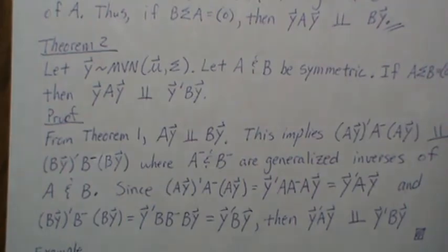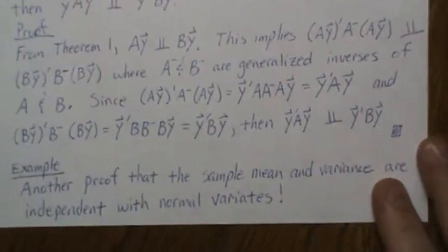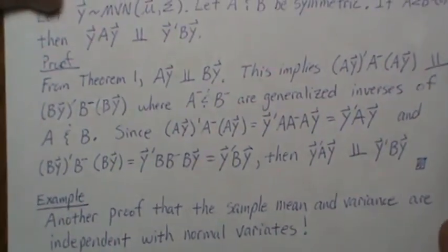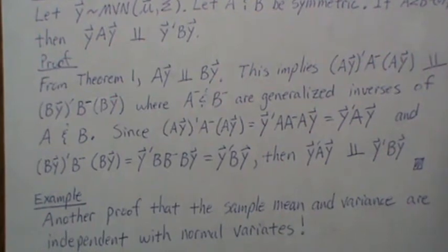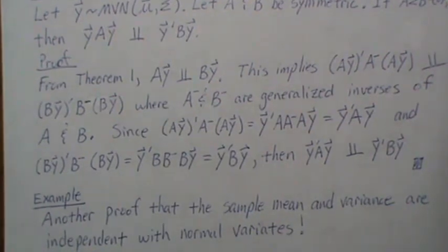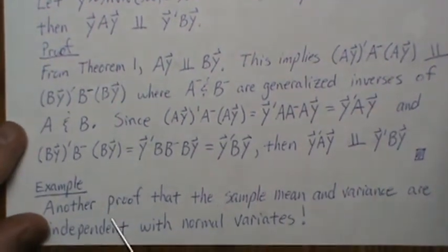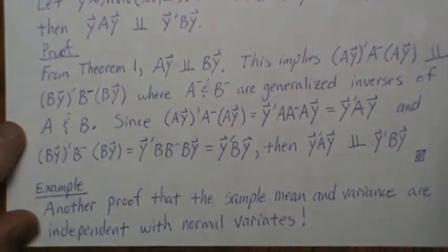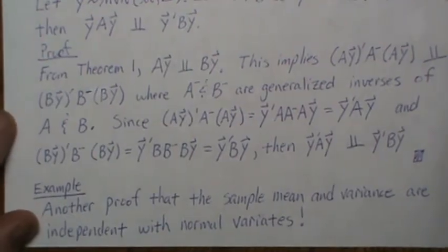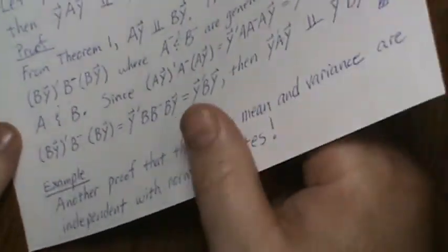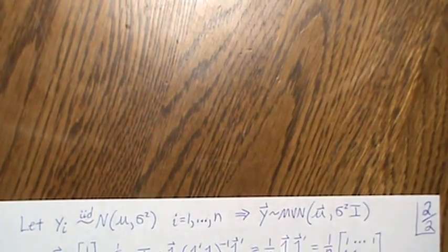Now, as a very neat example, we're going to prove that the mean and the variance are independent when we have normal variables. I say another proof because this will be the third proof that I show where the sample mean and variance are independent. But this one, we're going to use matrix notation to prove it.